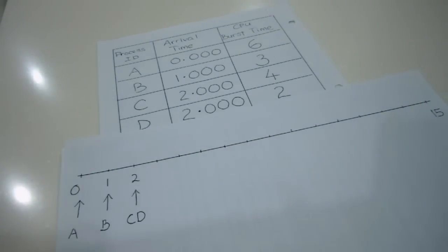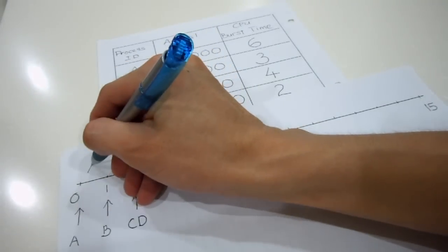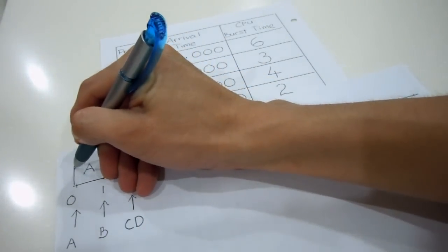Alright, so initially A is the only job in the queue. So it's going to go for execution.